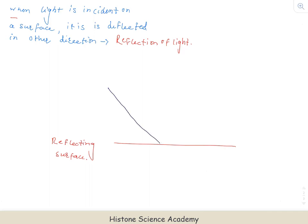This is a ray of light which is incident on a surface. So, the fact that whenever light is incident on a surface, it is reflected in the other direction. When this light hits the surface, it will deflect in another direction — it will propagate in another direction. Then I will say that this phenomenon is called reflection of light.